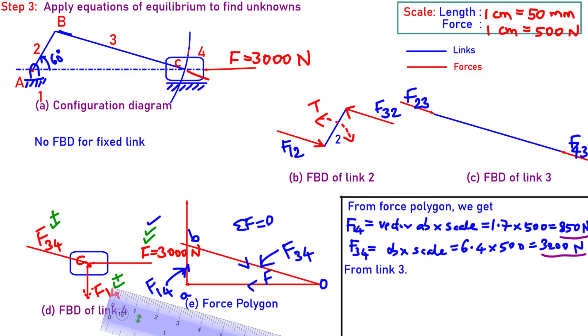From link 3, we can write F43 will be equal to F23 which will be equal to this F34. We have got the answer. Now we can go to link 2.